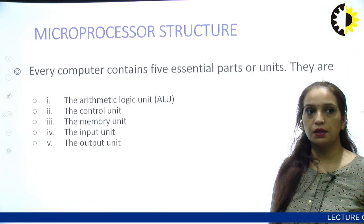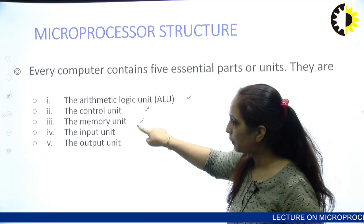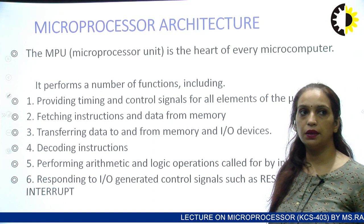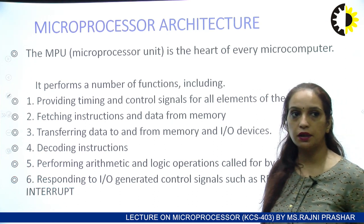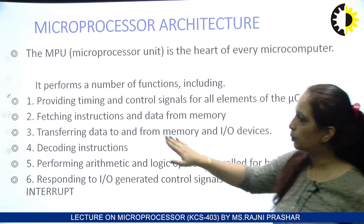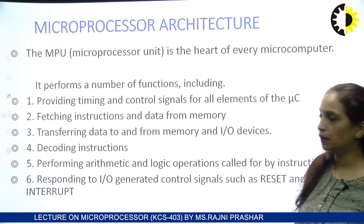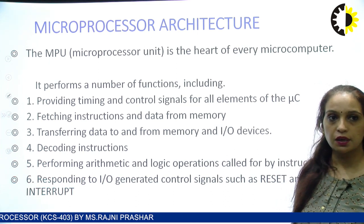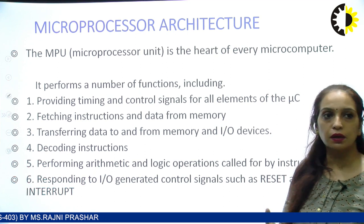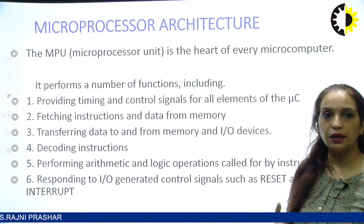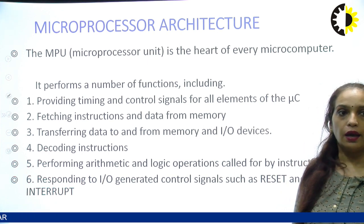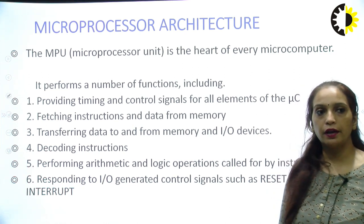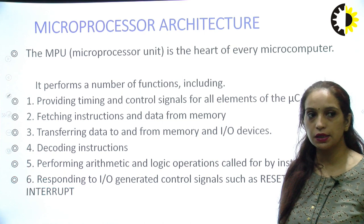Every microprocessor will have five essential components: ALU, control unit, memory unit, input unit, and output unit. Depending on the microprocessor architecture, it will provide timing and control signals for all elements, fetch instructions and data from memory, transfer data to and from memory and IO devices, decode instructions, perform arithmetic and logical operations in the ALU, and respond to IO-generated control signals such as reset and interrupts.